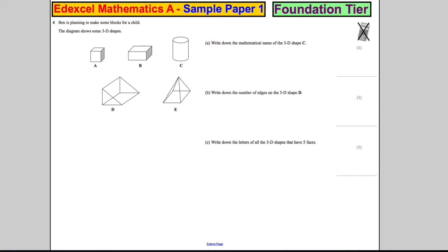Okay, question four. Here Ben is planning to make some blocks for a child. The diagram shows 3D shapes. Write down the name of shape C, so this one here. Well, it's like a gas cylinder that you'd have for the barbecue or you'd see cylinders in cars. It's called a cylinder.